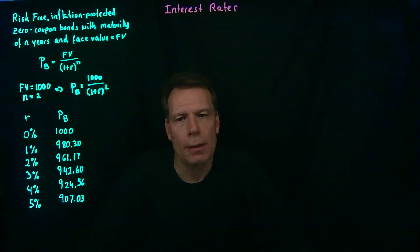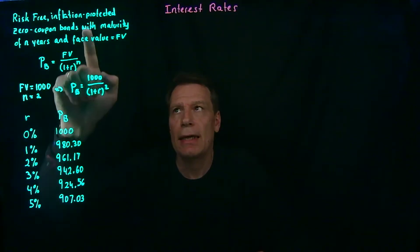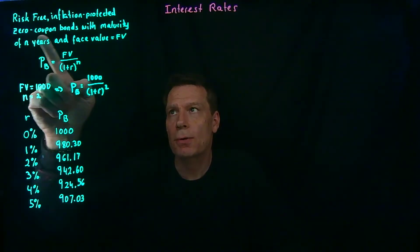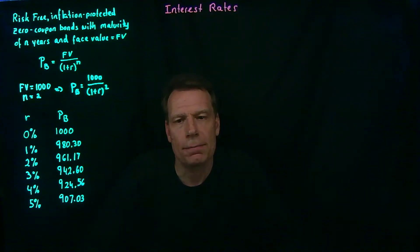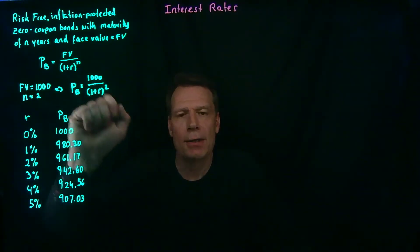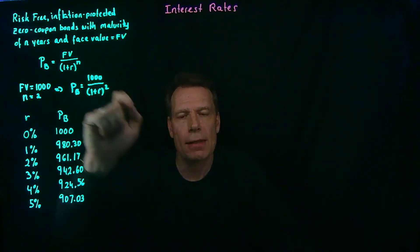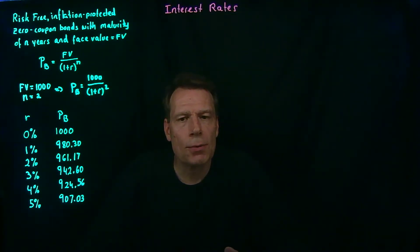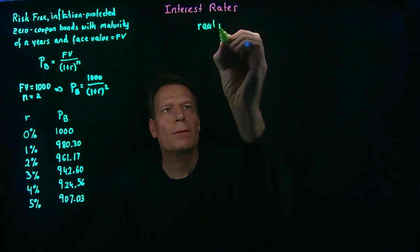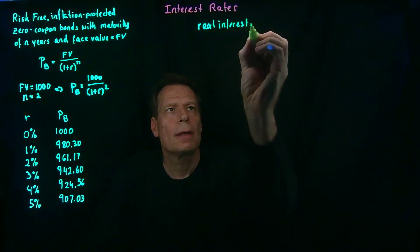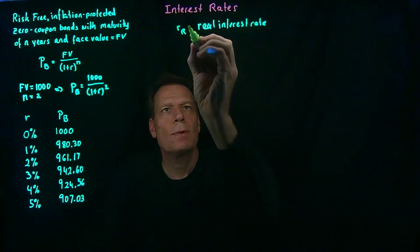We've now thought about a special kind of bond — a bond that's default risk-free and inflation-protected. We focused on bonds that are zero-coupon bonds with a maturity of n years and a face value we can denote by FV. The law of one price implies that the price of that bond equals the face value divided by 1 plus the interest rate to the nth power. The interest rate used in that calculation is the real interest rate, denoted with a subscript r.